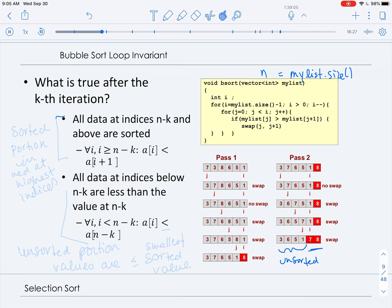So one way to look at these invariants is that we have a sorted portion in red at the highest indices. And then we have our unsorted portion. And we just know that their values are less than, and it could be equal, possibly less than the sorted, the smallest sorted value.